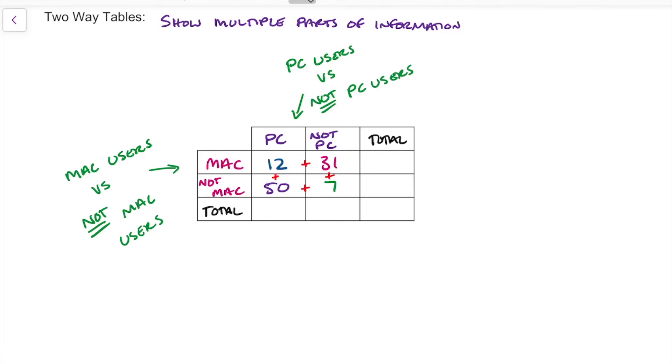So 12 and 50, well, that's 62. 31 and 7, well, that's 38. Then 12 and 31, that's 43. And 50 and 7 is obviously 57.